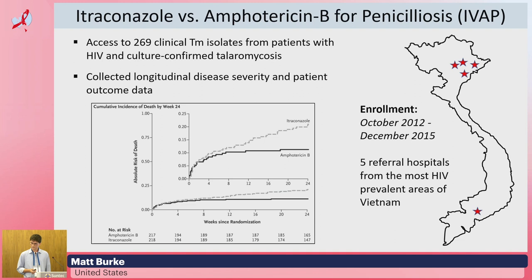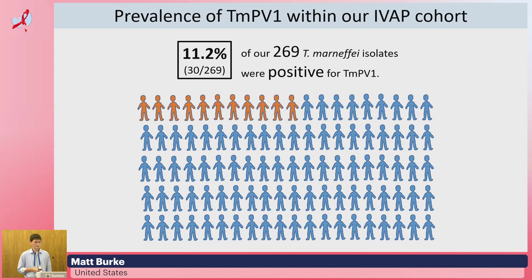We screened our cohort for the presence of mycovirus using the same two identification methods as Lao, and we found that 11.2% of our cohort was positive for mycovirus. When you consider this compared with Lao's 12.7%, it's pretty consistent.